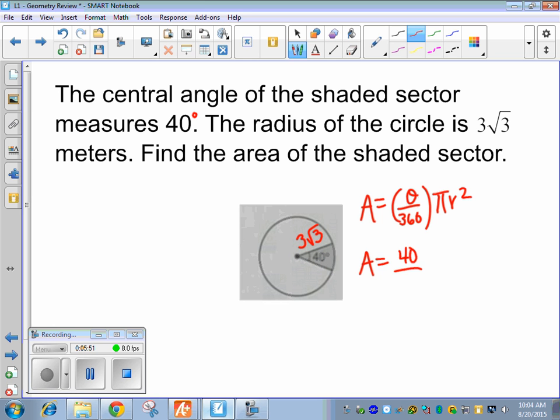So 40 over 360. And then times pi, and now we're squaring that radical, 3 root 3. That whole thing gets plugged in. So we can start simplifying here. Those zeros can cancel. 4 goes into 4 one time, and this becomes 1 ninth here.